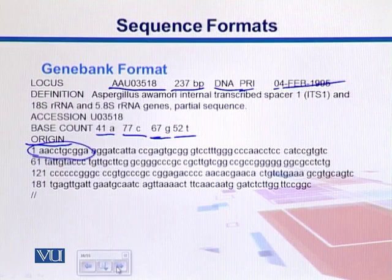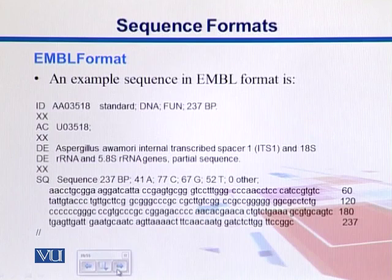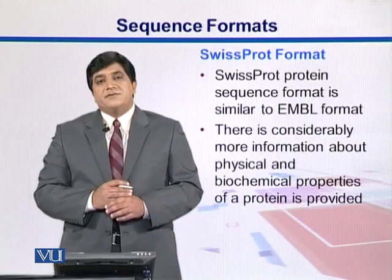The EMBL format is similar to GenBank. We have an ID, accession number, and descriptions represented as 'DE.' The sequence starts where the word 'SQ' appears, with a similar line structure as seen in GenBank, and the sequence ends with double slashes, just like GenBank.